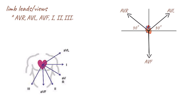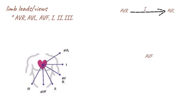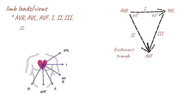The limb leads 1, 2 and 3 are bipolar leads because they have two associated electrodes. Lead 1 gathers information between aVR and aVL. Lead 2 gathers information between aVR and aVF. Lead 3 gathers information between aVL and aVF. Leads 2, aVF and 3 are called inferior limb leads because they primarily observe the inferior wall of the left ventricle, while leads 1, aVL and aVR are called lateral limb leads because they primarily observe the lateral wall of the left ventricle.